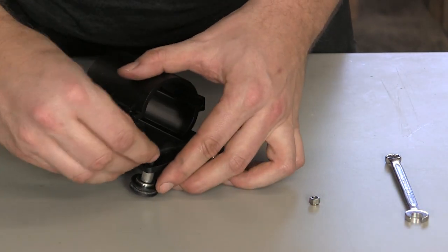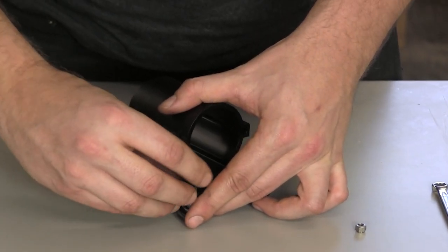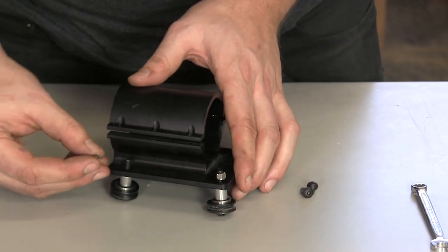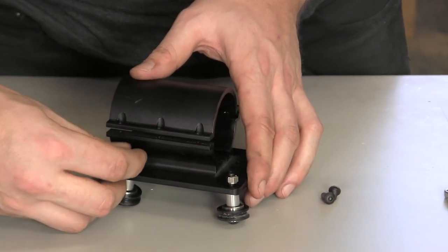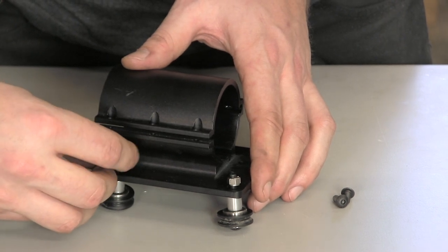Make sure that the shoulder of the eccentric nut faces the plate. When threading on the eccentric nuts, be sure that the shoulder seats inside of the larger hole.